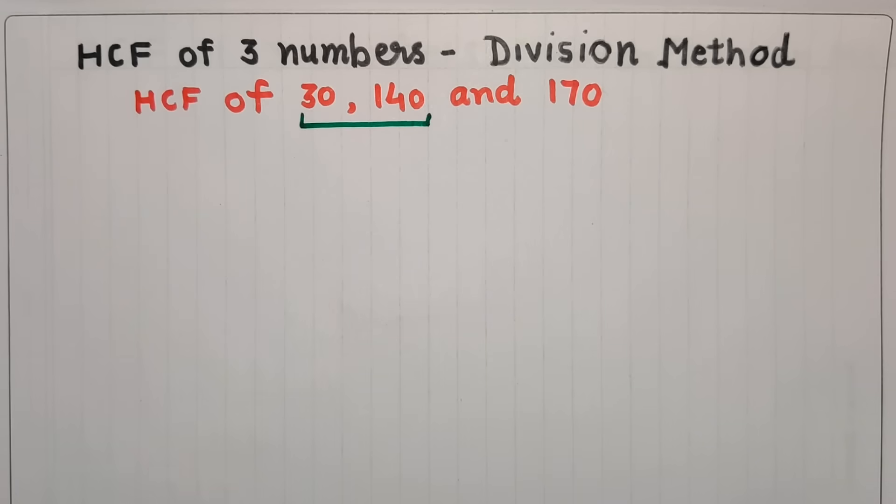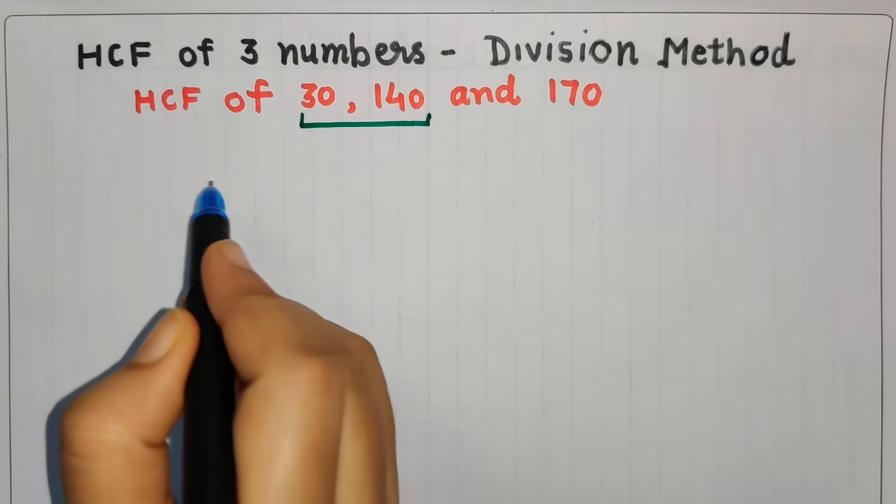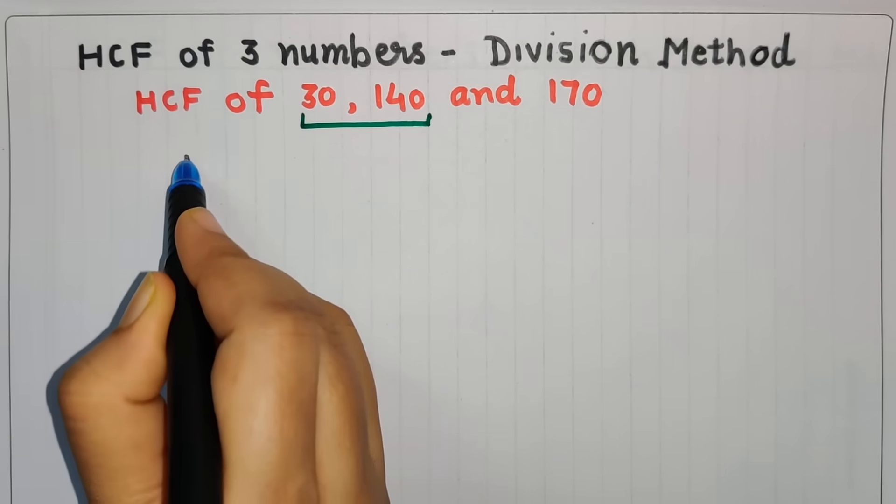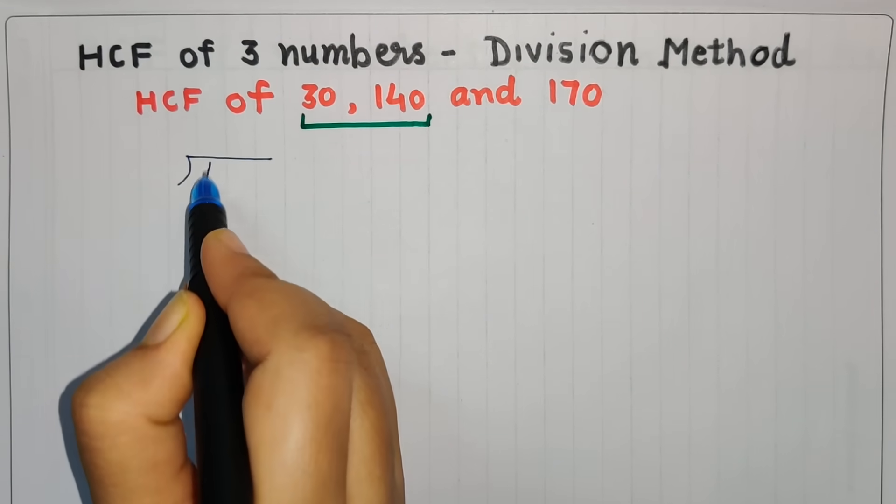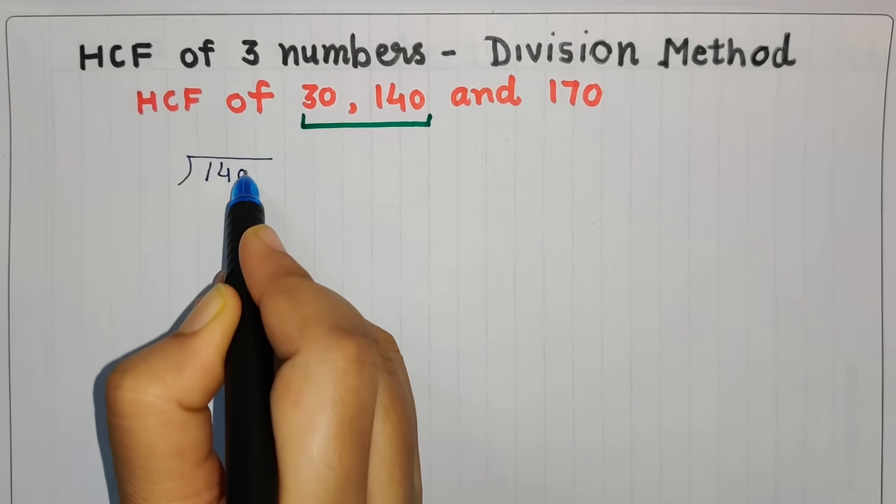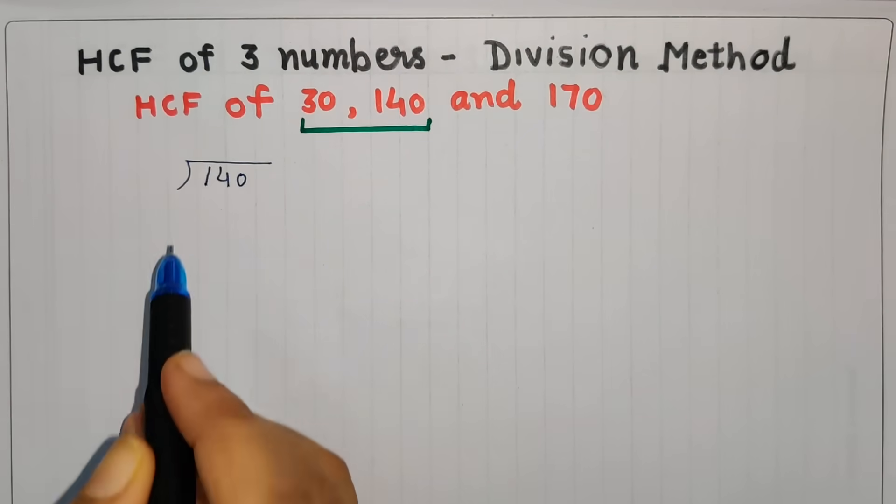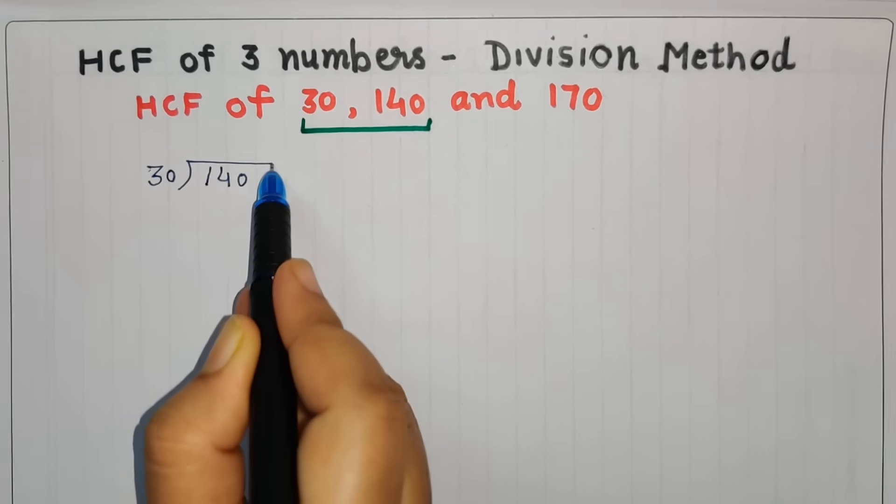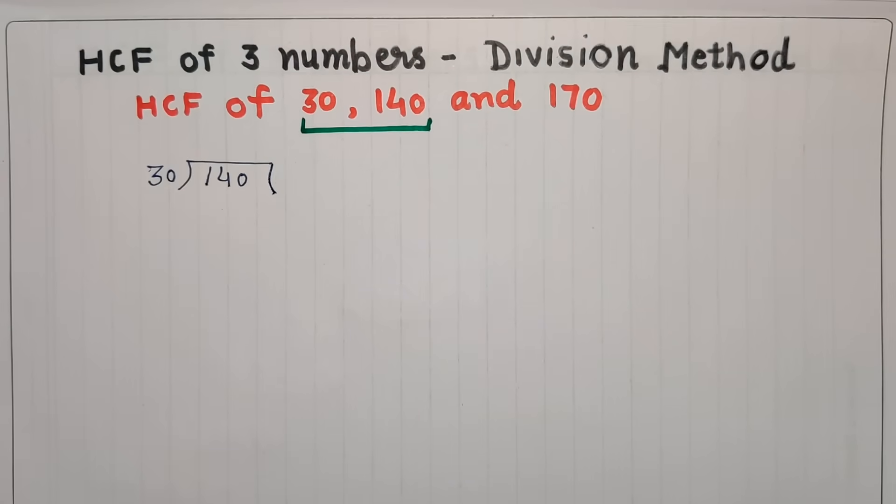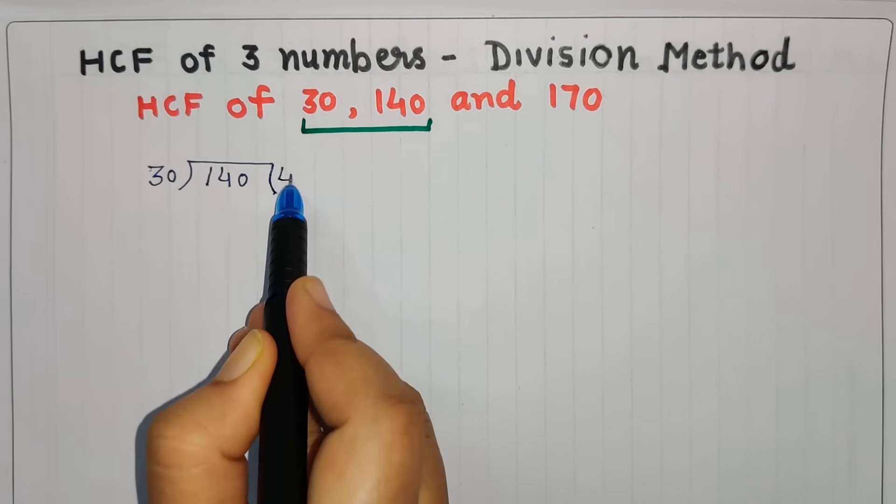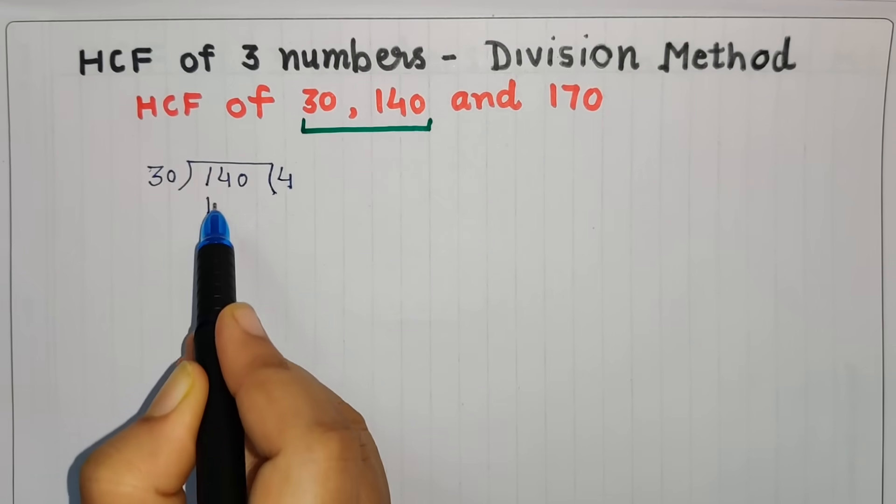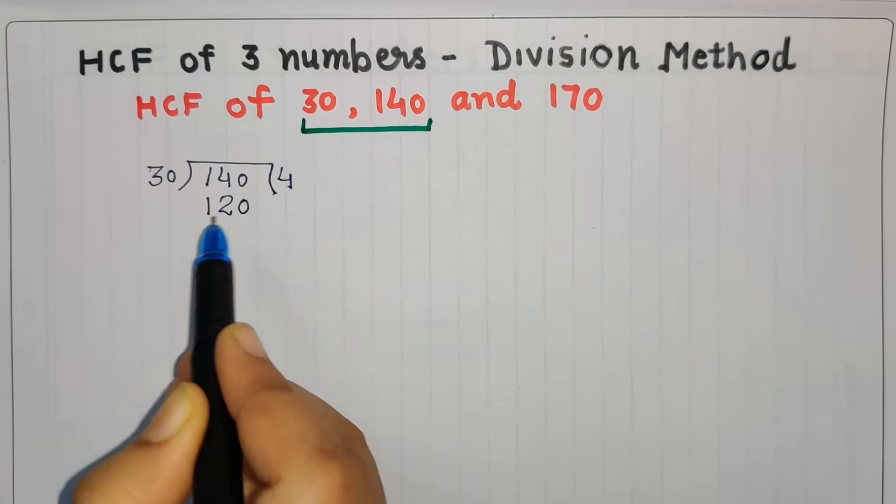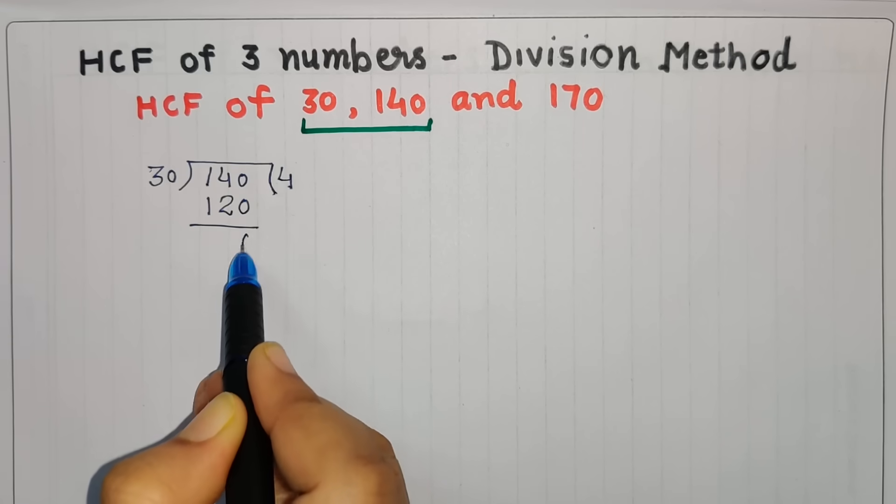and 140 with the division method. We know 140 is the bigger number so it will be written here, and 30 will be taken as divisor. Now we will divide them as normal division. Remainder left is 20.